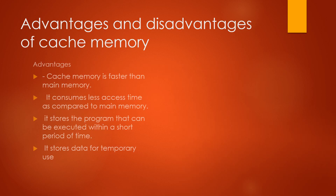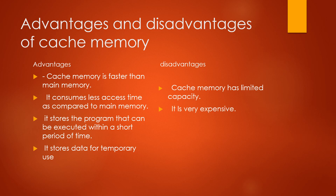Advantages and disadvantages of cache memory. Advantages: Cache memory is faster than main memory. It consumes less access time as compared to main memory. It stores programs that can be executed within a short period of time. It stores data for temporary use. Disadvantage: Cache memory has limited capacity and it is very expensive.